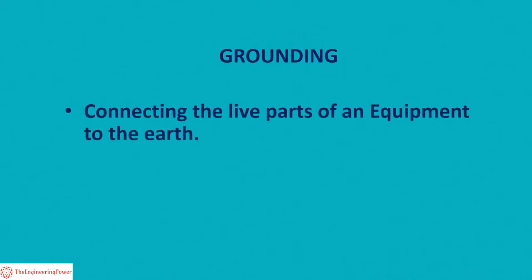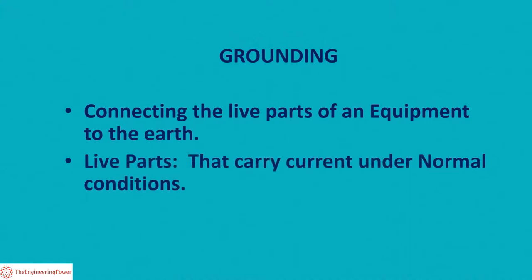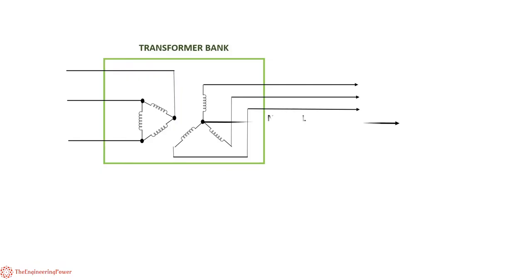First, we explain the term grounding. Grounding refers to connecting the live parts of equipment to the earth. By live parts, we mean the parts that carry current under normal conditions. For example, connecting the neutral of a generator or the neutral of a transformer in a star connection to the earth.